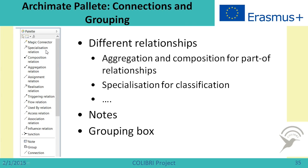It is important that we have specific specialization relations which give an opportunity to show classification. We have aggregation relations which give an opportunity to show part-of relations and many other relations. There is also a small group with nodes, and it is possible to group elements using this element — you put several elements into one group. There is also a specific line for connections when you want to introduce extra connections beyond those prescribed by the language.